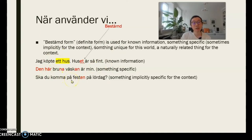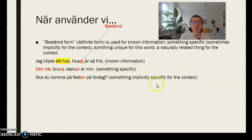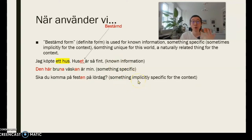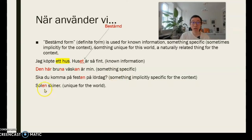'Ska du komma på festen på lördag?' — 'Are you coming to the party on Saturday?' Here 'festen' is something implicitly specific for the context. When you say 'Ska du komma på festen på lördag?' to your friend, you are implicitly implying this is the party your friend should have known about. Then 'Solen skiner' — 'The sun is shining.' Solen is unique in the world, so in this case we also use the definite form.